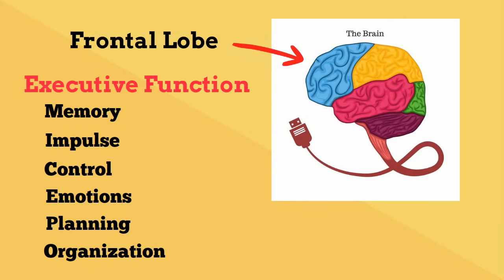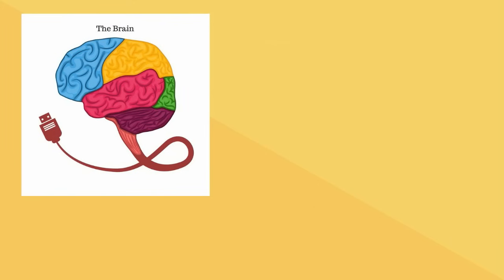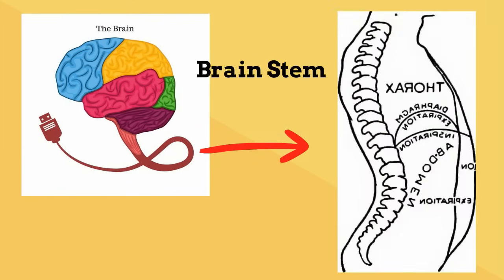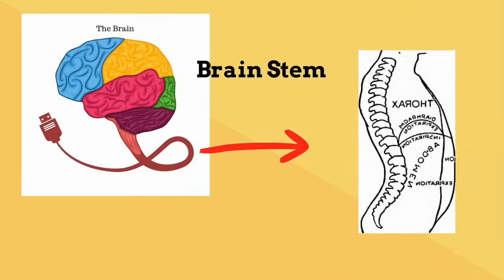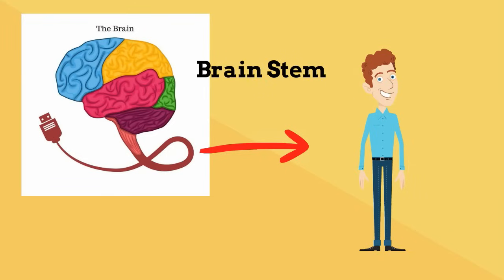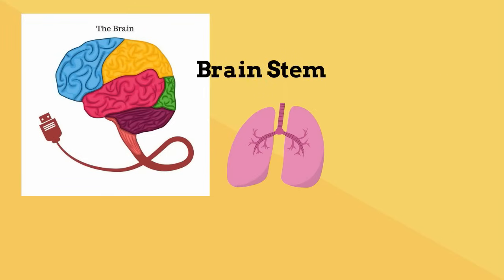The brain is connected to the spinal cord at the brain stem. The brain stem controls the flow of messages between the brain and the rest of the body. It also controls very basic functions such as your breathing, heart rate, and blood pressure.